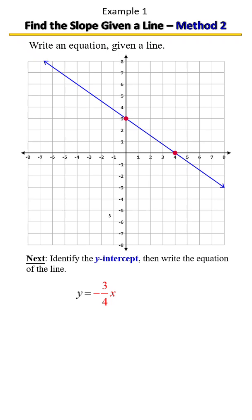Next, we're going to identify the y intercept and write the equation of the line. Notice here that the y intercept is located at 3. So putting it all together, our line is y equals negative 3 fourths x plus 3.